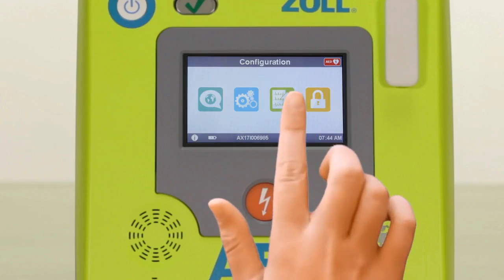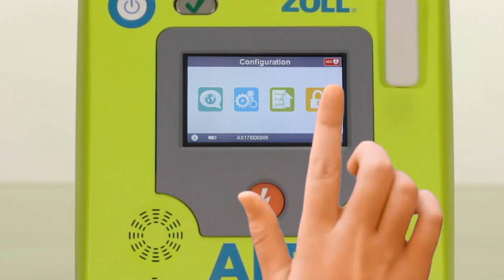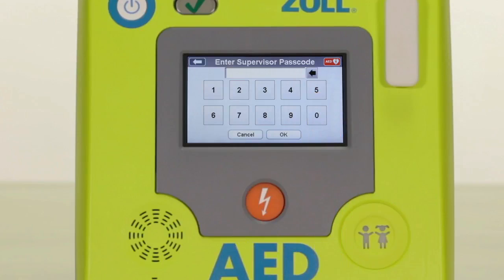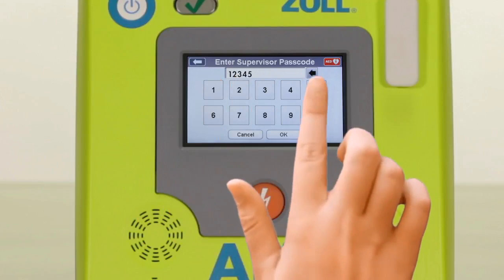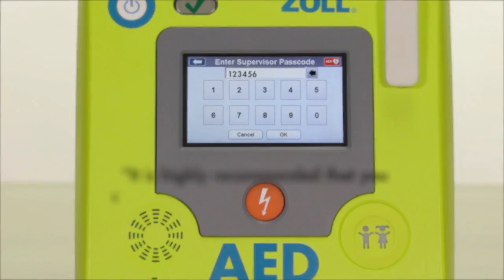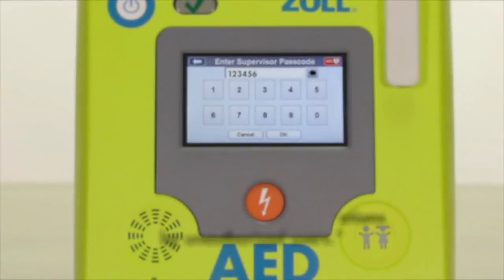Selecting the blue gear icon will open the basic configuration screen. In this screen you will see four icons. The last icon on this screen is the locking feature that allows only authorized users to access the advanced configuration features of the AED. Press the yellow lock icon and enter the passcode. The default passcode on a new ZOL AED3 is 123456. If you wish, you can create your own passcode in the advanced configuration settings, which we will cover later in this video.